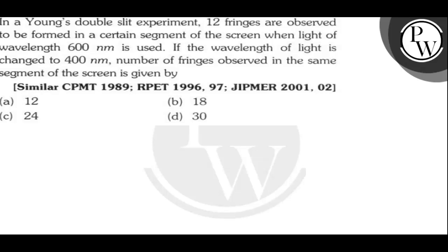Hello! Let's read the question. In a Young's double slit experiment, 12 fringes are observed to be formed in a certain segment of the screen when light of wavelength 600 nanometer is used. If the wavelength of light is